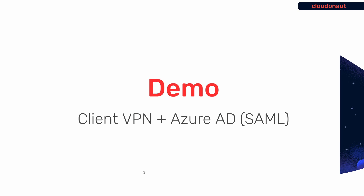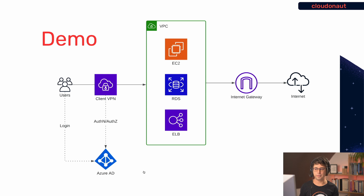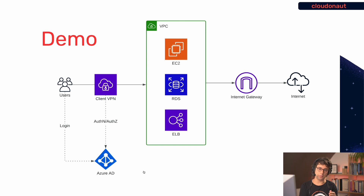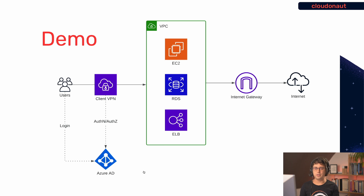Next I want to show how the authentication part works with AWS Client VPN. I've chosen to demonstrate it with Azure Active Directory using SAML — you can connect to other identity providers as well, but that's the example I'm using. The scenario: users connect to a VPC over VPN, and the question is how they authenticate. One interesting option is SAML with Azure Active Directory.